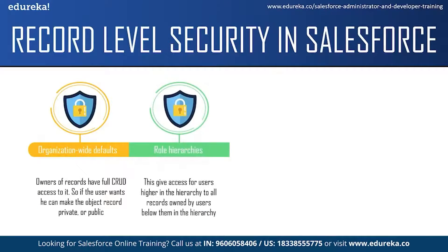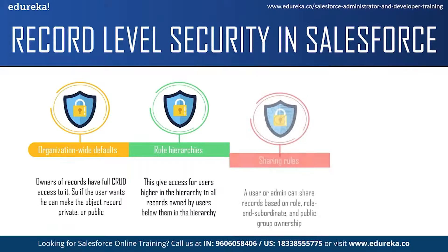The next way is role hierarchy, which gives users higher in the hierarchy access to all records owned by users below them. For example, a sales representative can only view their own records, but a manager can view all sales representatives' records. Role hierarchy represents levels of data access rather than the org chart exactly. Records can also be shared using sharing rules — a user or admin can share records based on roles, subordinates, and public group ownership.